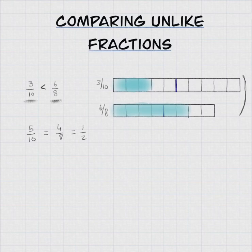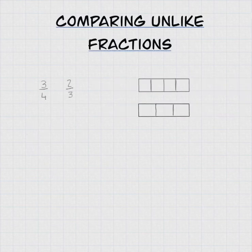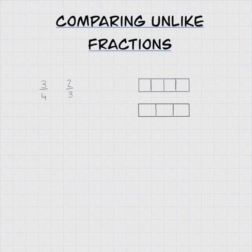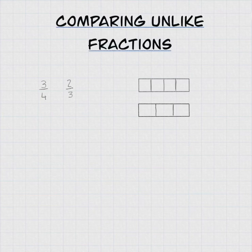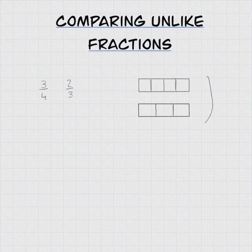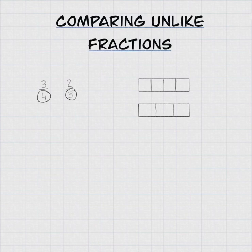Now if we look at this next example, we've got two fractions: 3 quarters and 2 thirds. Both of these fractions are bigger than a half. Which means we can't use our benchmark of a half — we'd find they're both bigger than a half, but that doesn't tell us which is bigger. Is 3 quarters bigger or is 2 thirds bigger? So we're going to have to find a new way, and to do this we need to change both fractions so that they have the same denominator, meaning each model has the same number of equally sized parts.